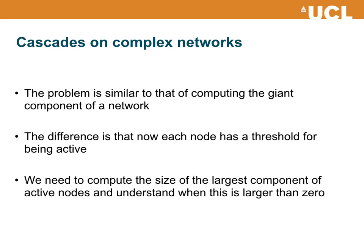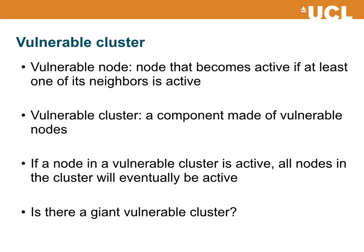We will be interested in understanding when we have a non-zero probability of observing these global cascades. The problem is similar to that of computing the giant component of a random network, with the difference that now each node has a threshold for being active, while when we compute the giant component that's not the case. What we will really have to do is compute the size of the largest component of active nodes, and derive equations satisfied by the probability of observing large cascades, as a function of parameters such as the average degree and the threshold for node activation.